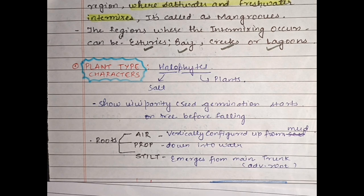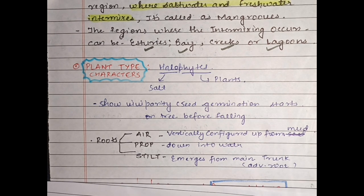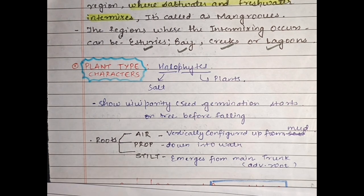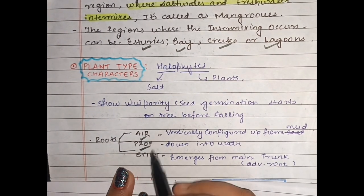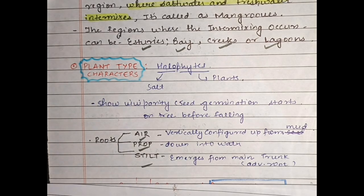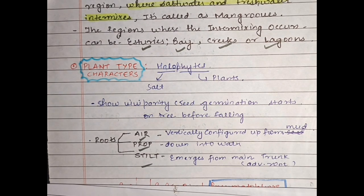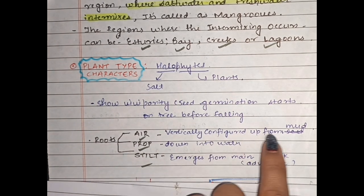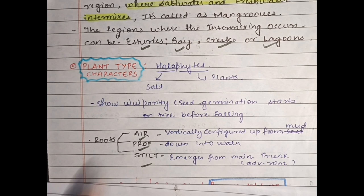Iske alawa hum baat karte hain roots ki. Aysi jo plants hote hain woh teen type ki adaptation show karte hain roots mein: air root, prop root, and stilt root. Sabse important jo air root hoti hai usko hum basically pneumatophore word use karte hain. Ek word hai pneumatophore — isko aap dhyan mein rakho. Jo roots hoti hain inme ek bohut specialized roots hoti hain jo ki upar ki taraf grow karti hain, yani ki woh anti-gravity grow karti hain. Un roots ko hum kehte hain pneumatophore — they are vertically configured up from the mud.